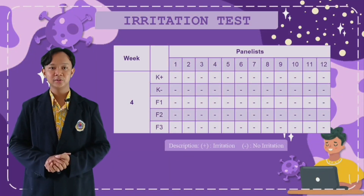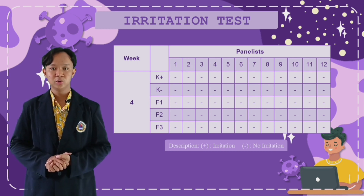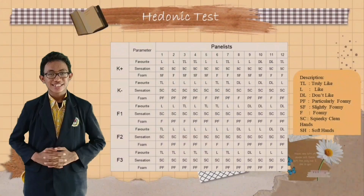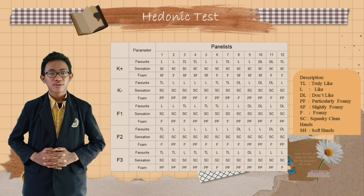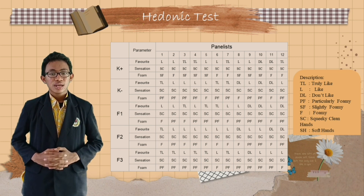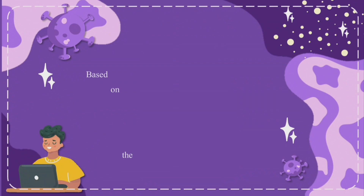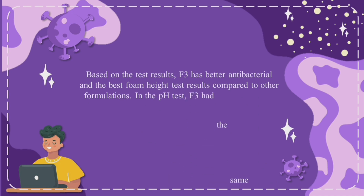The irritation test aims to determine the presence or absence of an irritation reaction on the skin. The result of the irritation test over the shelf life of 4 weeks did not show any irritation in 12 panelists. The hedonic test, conducted with 12 panelists, showed that in negative control, Formulation 1, and Formulation 2, there were 3 panelists who stated they did not like it. At positive control, there were 2 panelists who did not like it. In Formulation 3, there was only 1 panelist who did not like it. Based on the test results, Formulation 3 has better antibacterial performance and the best hedonic test results compared to other formulations.